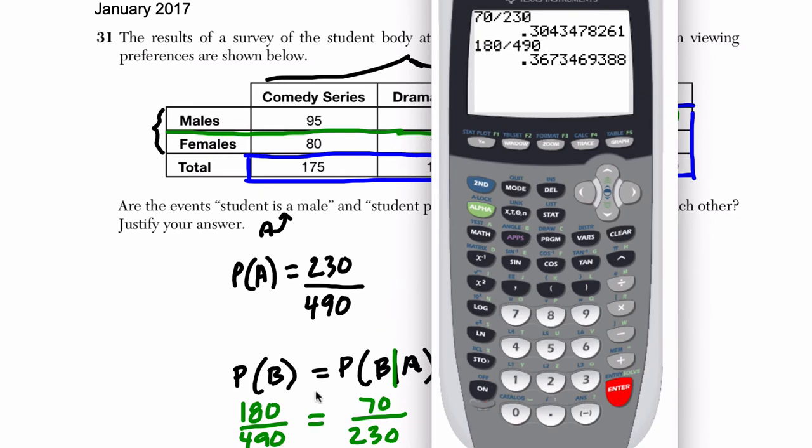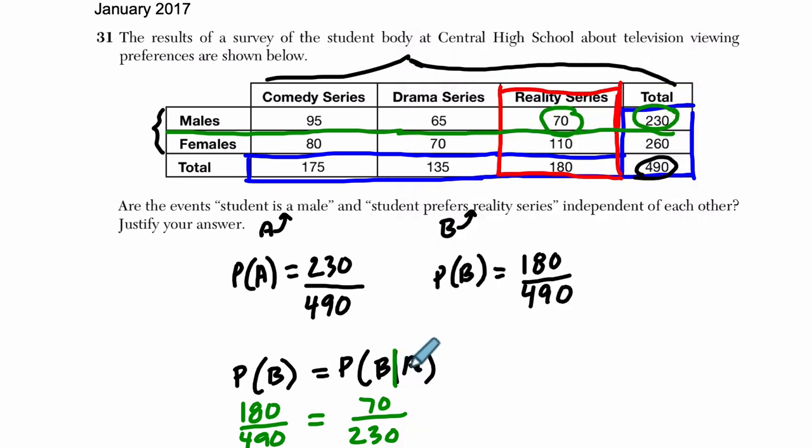So here we could say it's not independent. You would write down it's not independent because these two fractions aren't equal. And you would say approximately what they equal. Like, I want you to justify your answer. So say the probability of B is 180 over 490, which is about 0.37. And the probability of B given A is about 0.30. And those numbers are not the same. You could also state that these events A and B are only independent if the probability of B equals the probability of B given A. But just make sure you break these fractions down to their decimal equivalents. Alright, thanks.